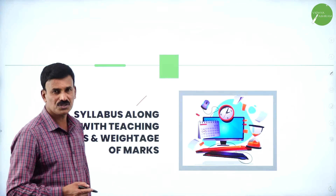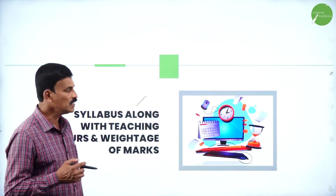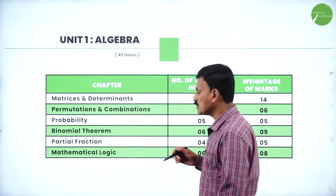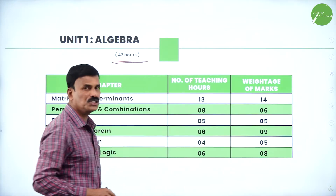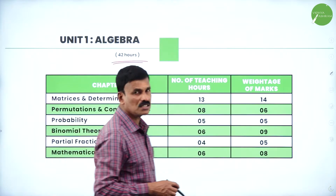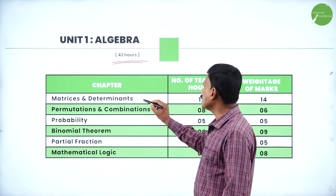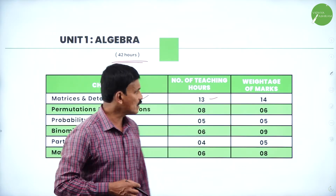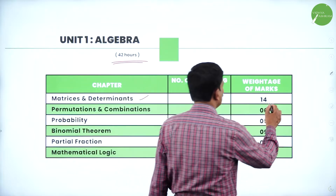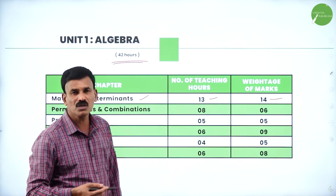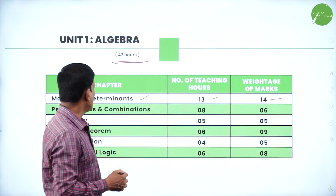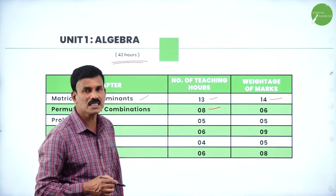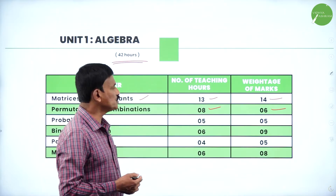So the syllabus — what are the chapters you are going to study and the weightage along with the question paper pattern. The first unit is Algebra. In Algebra the maximum number of hours is 42 hours. The first easiest and important chapter is Matrices and Determinants — 13 teaching hours and 14 maximum marks. Very easy to get 14 marks from this chapter. The next important chapter is Permutations and Combinations — 8 hours and 6 marks.